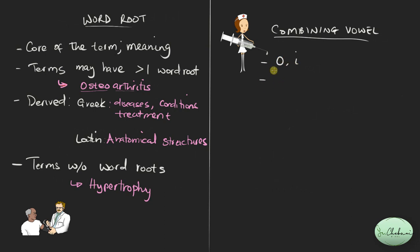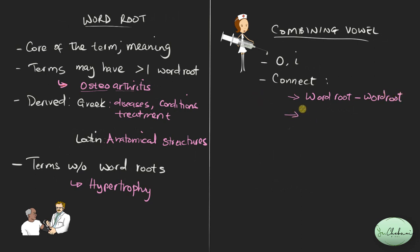What do combining vowels do? They connect a word root to another word root, and they also connect a word root to a suffix. Those are the two functions of a combining vowel — word root to word root, as we see in osteoarthritis, and word root to suffix.